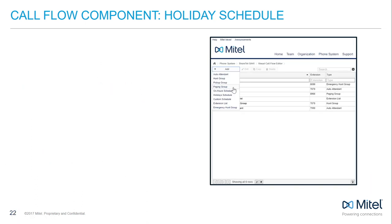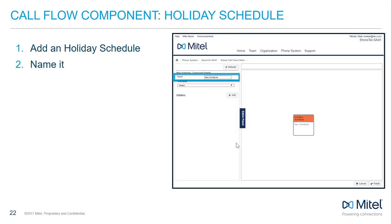Holiday schedules override the on-hour schedule on the date or dates scheduled. This allows you to establish a weekly recurring on-hours and off-hours call flow with the on-hours schedule, and then define one-off or yearly recurring holiday call flows separately and automatically with your holiday schedule. Add a holiday schedule by selecting Holidays from the Add menu and naming it something recognizable and unique.